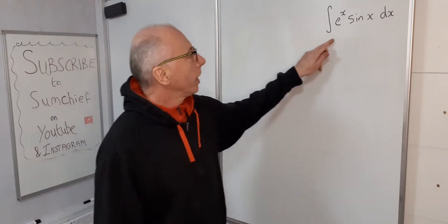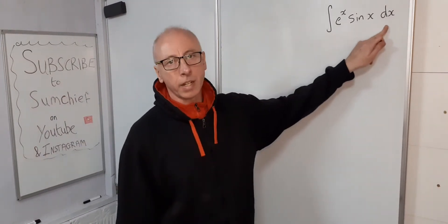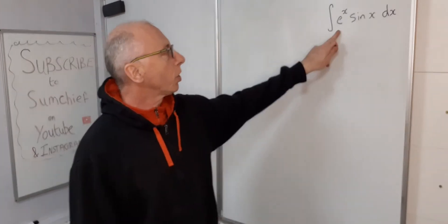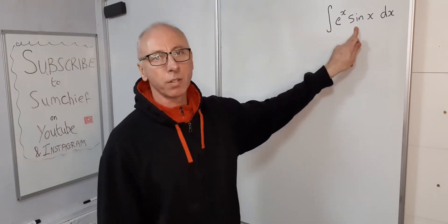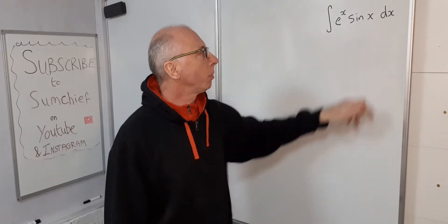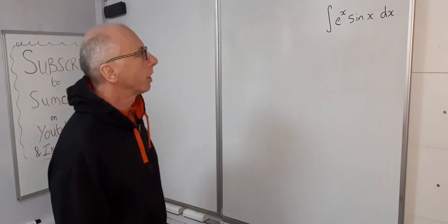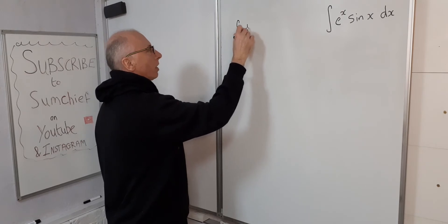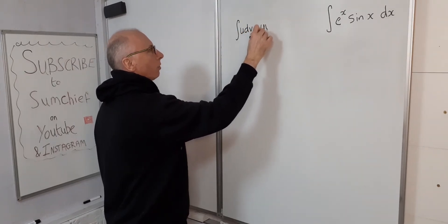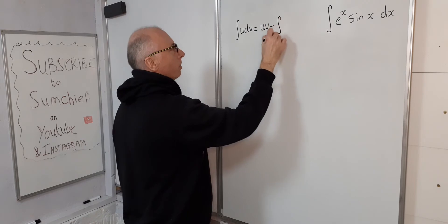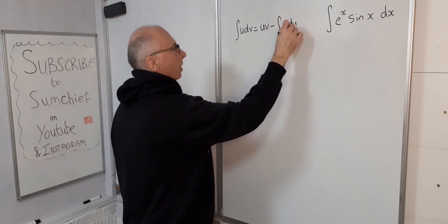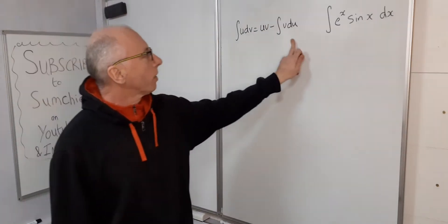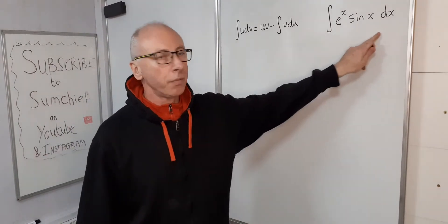We've got the question: the integral of e^x times sine(x) with respect to x. We've got two terms, so straight away we can see we need integration by parts. The formula for integration by parts is: ∫u dv = uv minus the integral of v du. That's the formula — now how are we going to apply it?